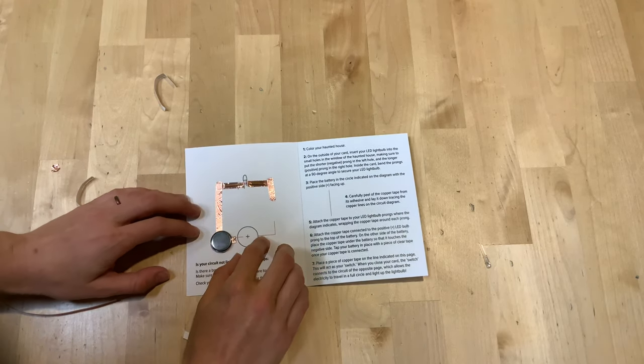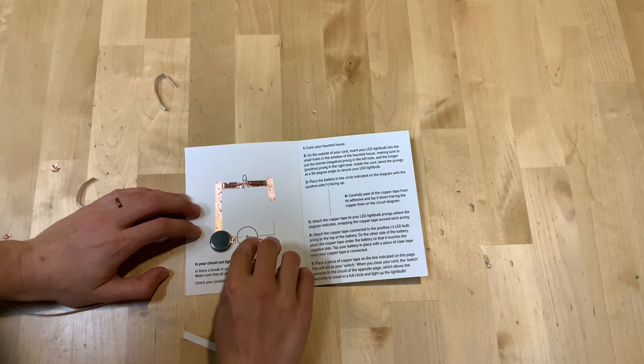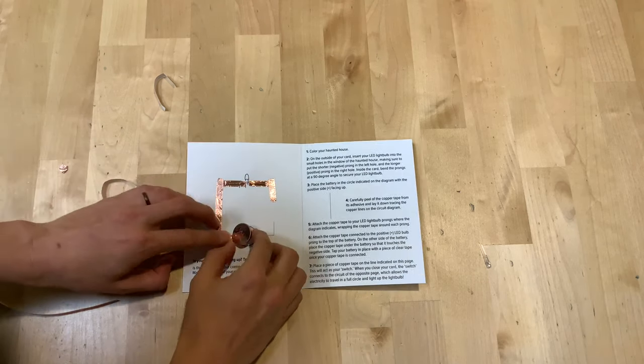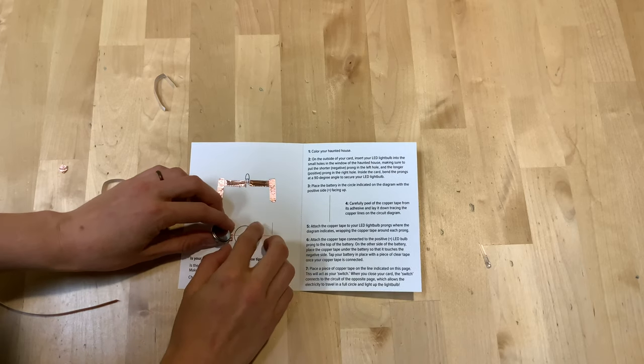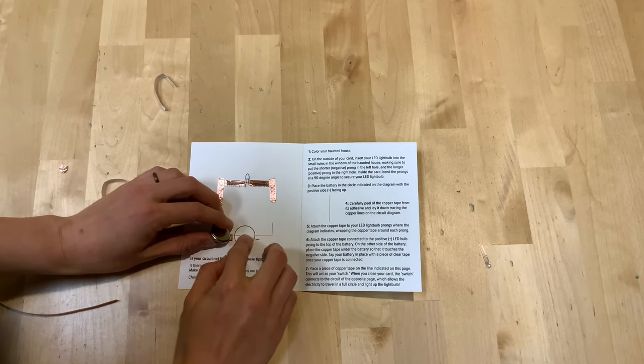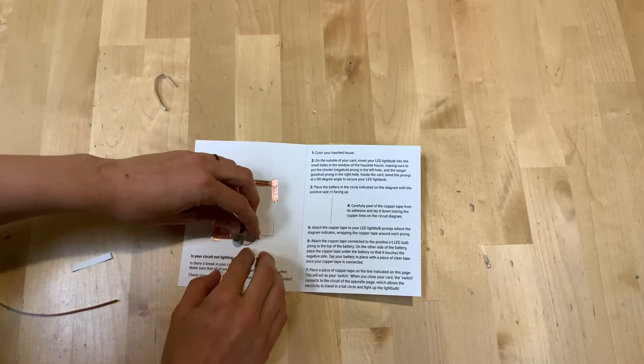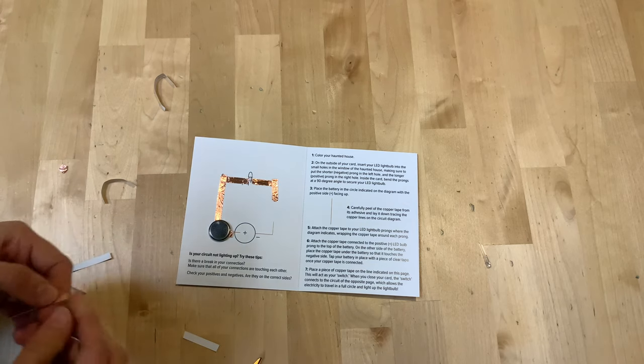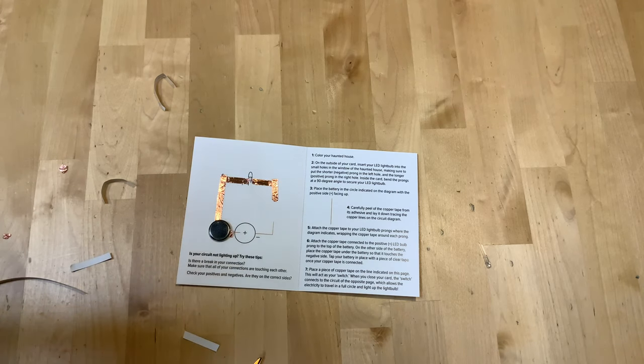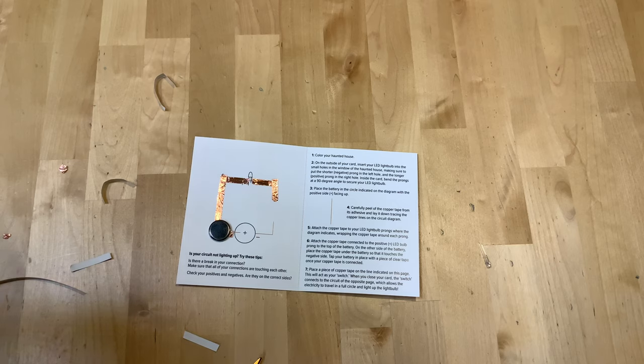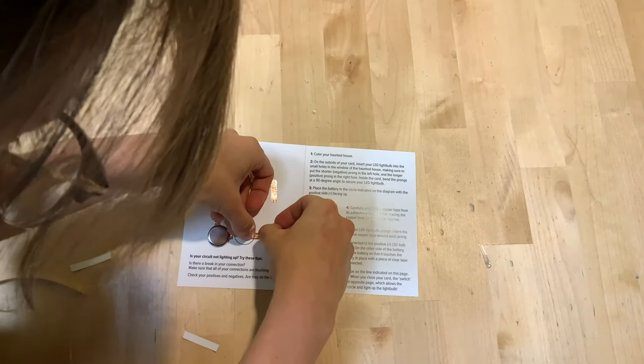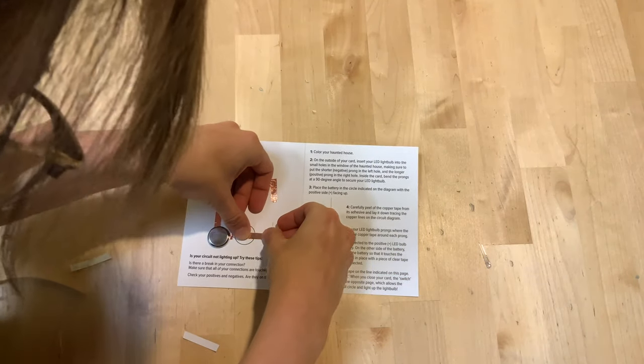Now over here we want the copper tape to come underneath the battery. So attach the copper tape connected to the positive side on the top, and on the other side of the battery place the copper tape under the battery. So I'm just going to flip my battery over really quick.